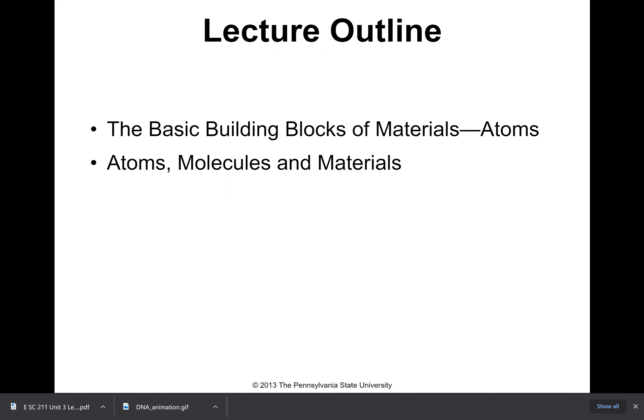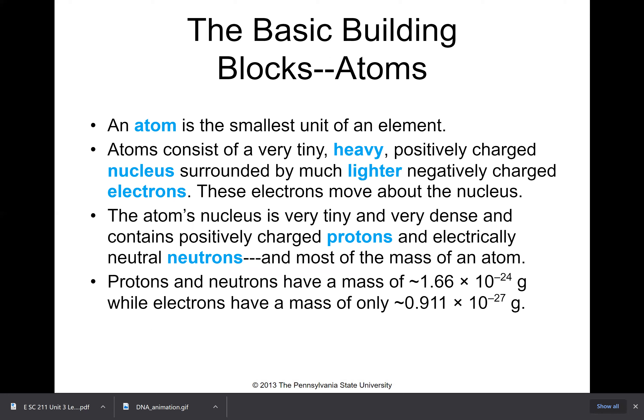The basic building blocks of materials are atoms, and atoms make molecules, and molecules make materials. An atom is the smallest unit of an element and consists, as chemistry students know, of a very tiny, heavy, positively charged nucleus surrounded by much lighter, negatively charged electrons. These electrons move around the nucleus. The atom's nucleus is very tiny and very dense and contains positively charged protons and electrically neutral neutrons, and most of the mass of the atom. The protons and neutrons have a mass each of about 1.66 times 10 to the negative 24 grams, which is very tiny—just think one with 24 zeros ahead of it.